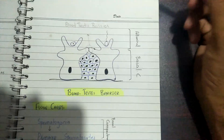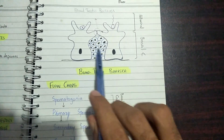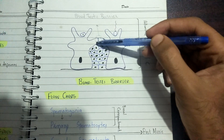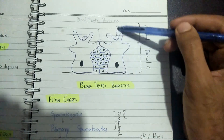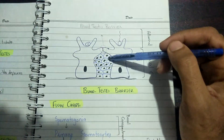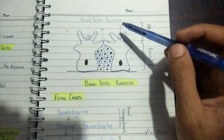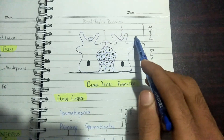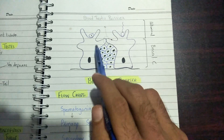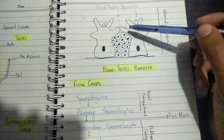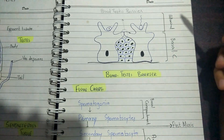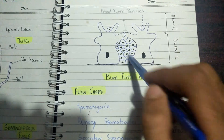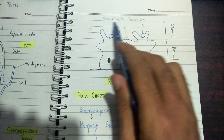Looking at the physiology of these cells, we have Sertoli cells — columnar in shape — with spermatogenic cells in between them. You can see that a type of barrier forms between certain cells. Above this barrier is the adluminal compartment, and below it is the basal compartment. This is called the blood-testis barrier, and it has two major physiological importances.